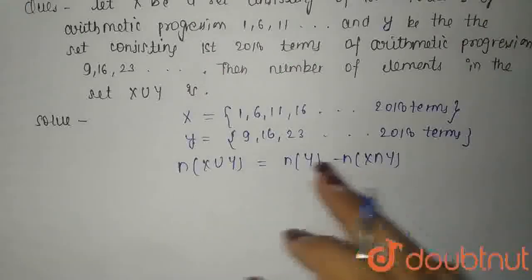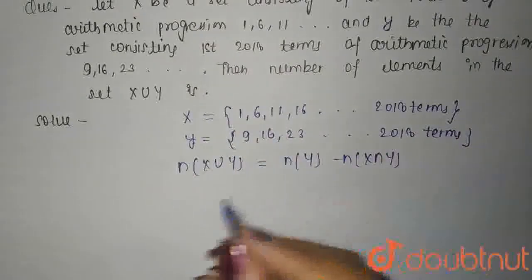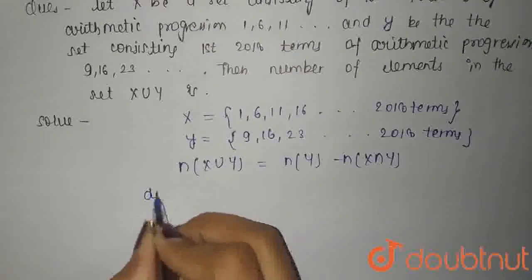So common difference of set X is 6 minus 1, 11 minus 6, 16 minus 11, all is 5. So the common difference in X is 5.